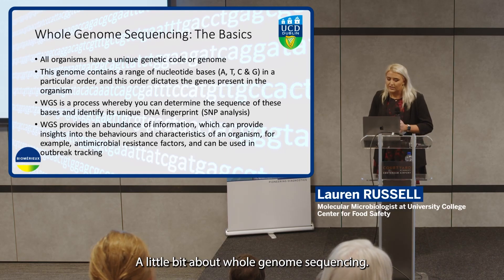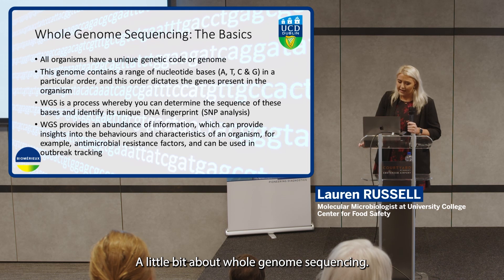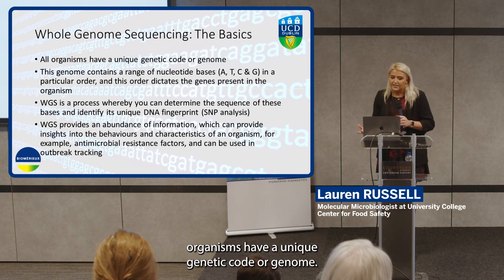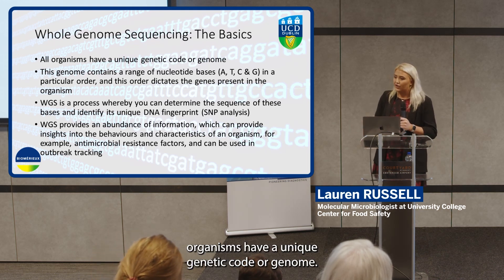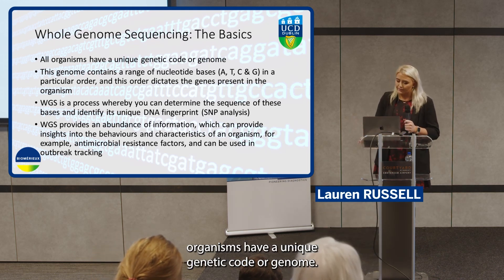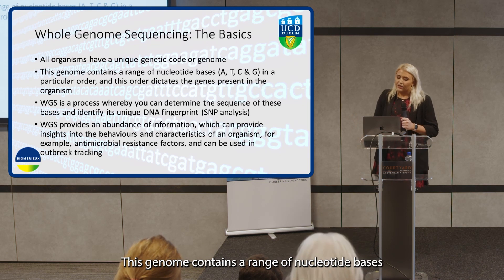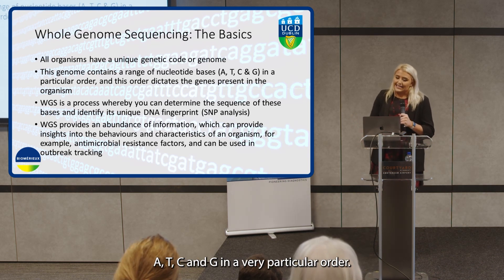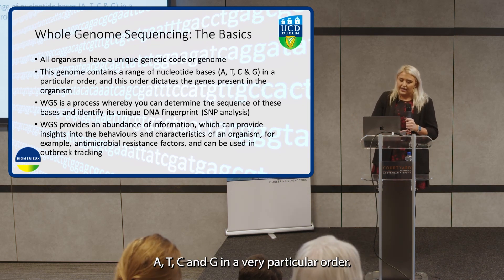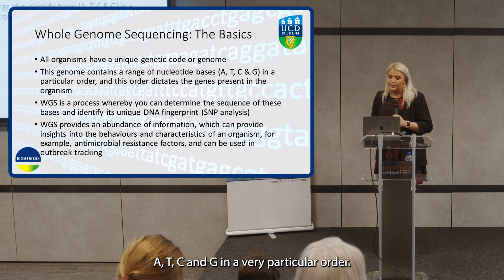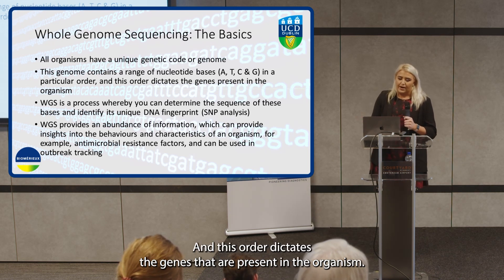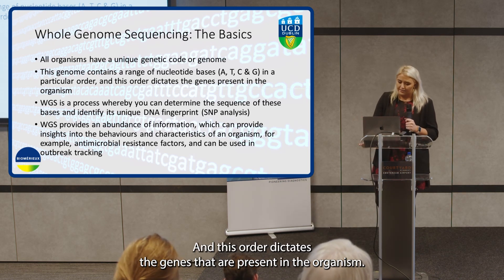A little bit about whole genome sequencing. As we all know, organisms have a unique genetic code or genome. This genome contains a range of nucleotide bases — A, T, C and G — in a very particular order, and this order dictates the genes that are present in the organism.